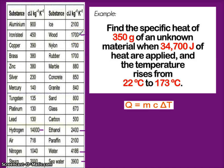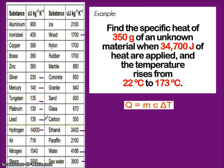Look at all these metals here: silver, mercury, tungsten, platinum — all metals. These conduct heat well, and you'll find out in later chapters they will also conduct electricity pretty well.